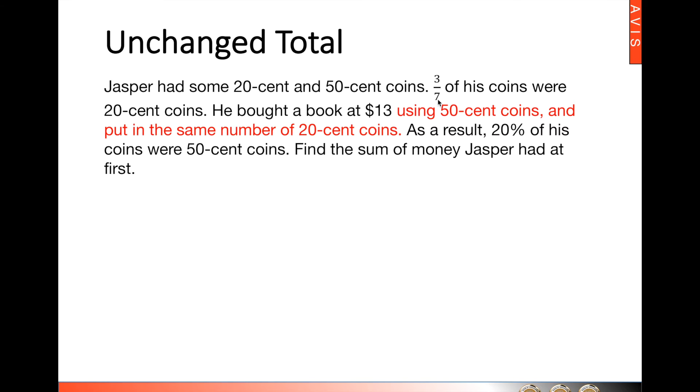Three-sevenths of his coins were 20-cent coins at first. In other words, before, we had 3 units of 20-cent coins and the remaining 4 units would be 50-cent coins. He used $13. As a result, 20% of his coins were 50-cent coins. 20% is one-fifth. So 1 unit is 50 cents. The remaining 4 units would be 20-cent coins.